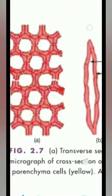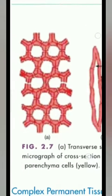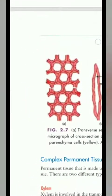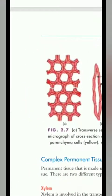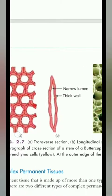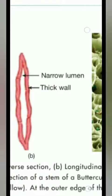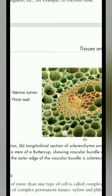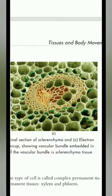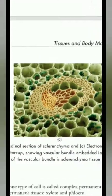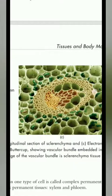Sclerenchyma cells provide mechanical strength and rigidity to the plant body. There are no internal structures visible since the cells are dead. The lumen is very narrow and the cell wall is very thick. This tissue is found near the vascular bundle.